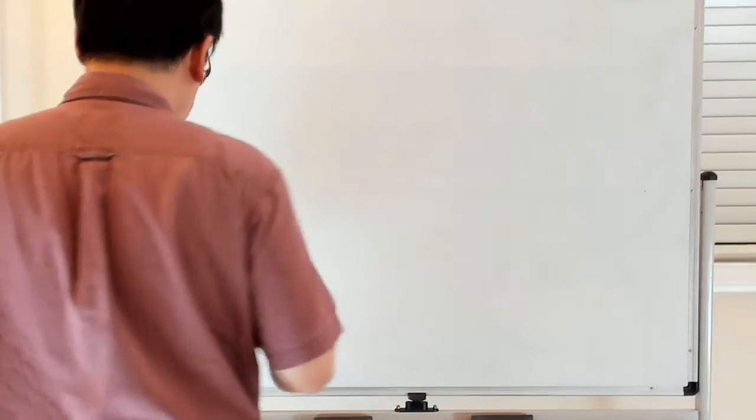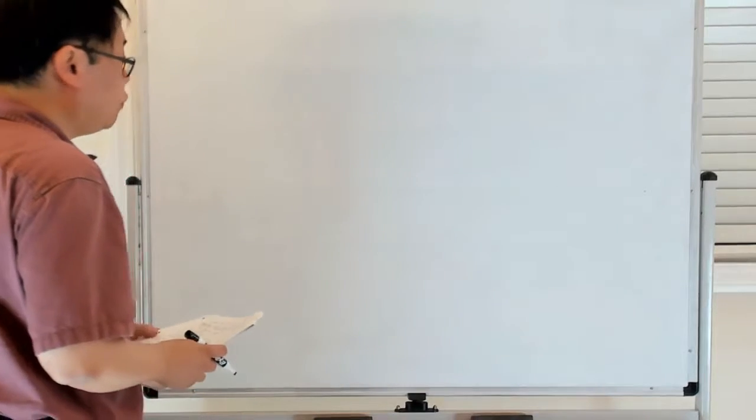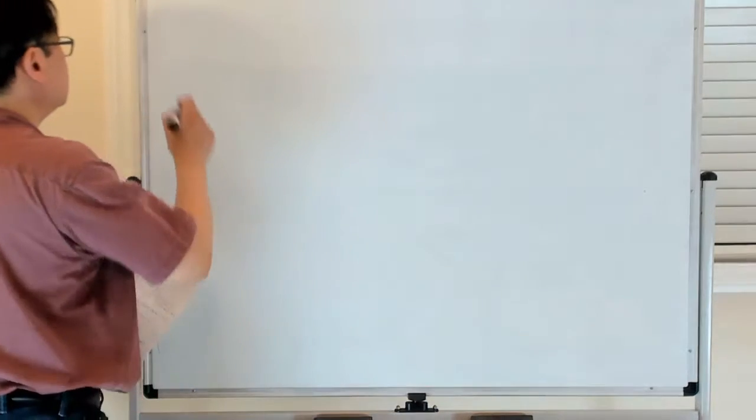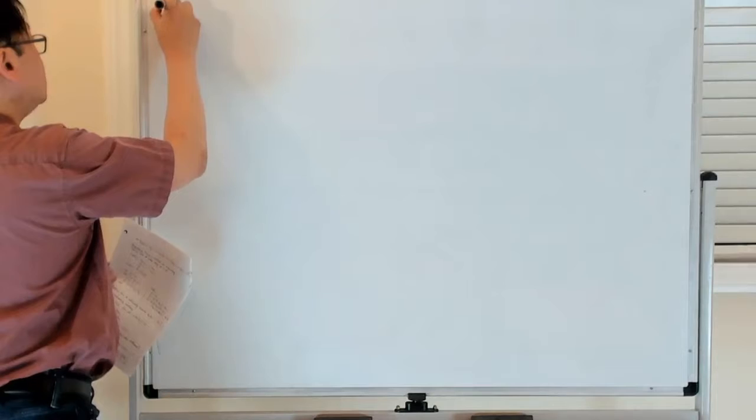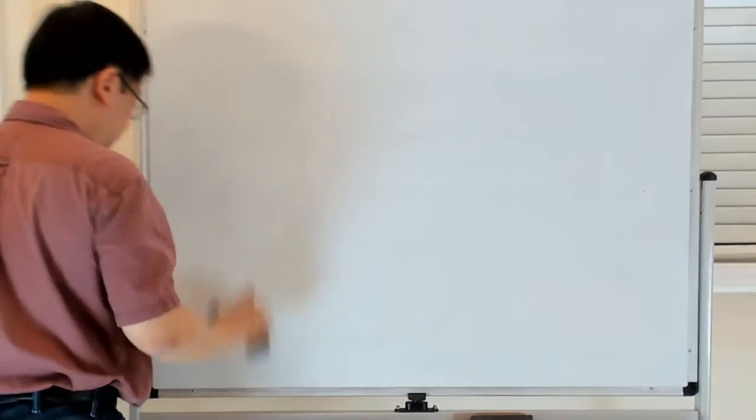So now we're going to address the question of how to efficiently compute the coefficients in the Newton form of the interpolating polynomial. This is what is going to be called divided differences.